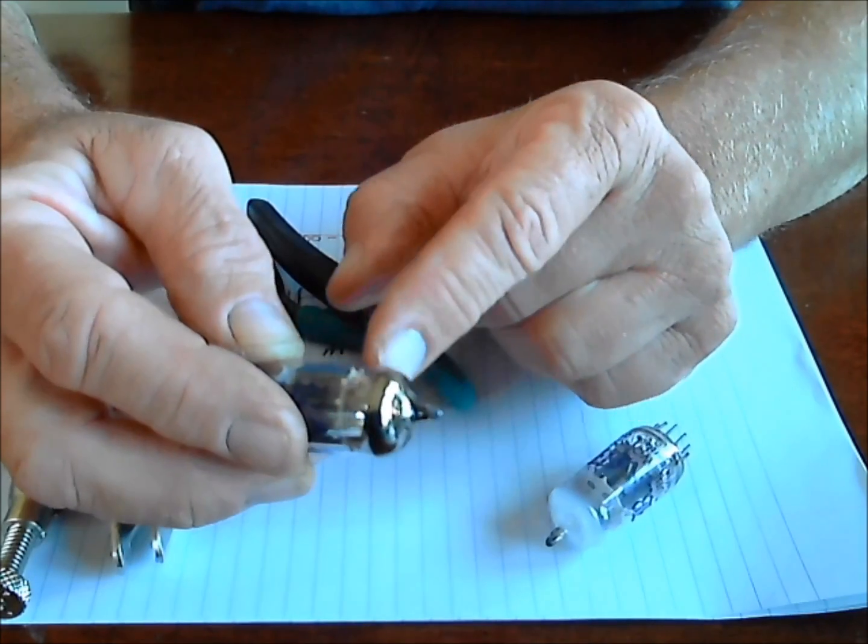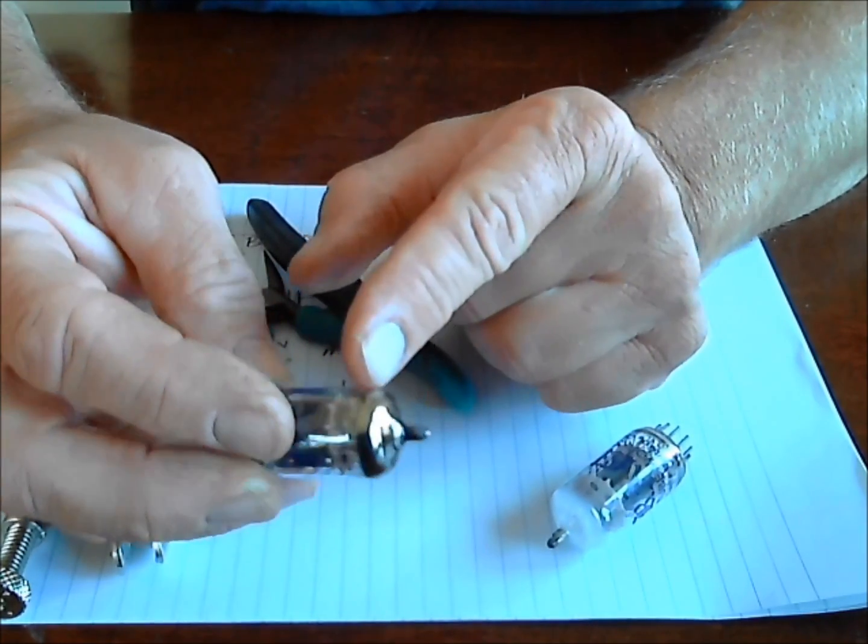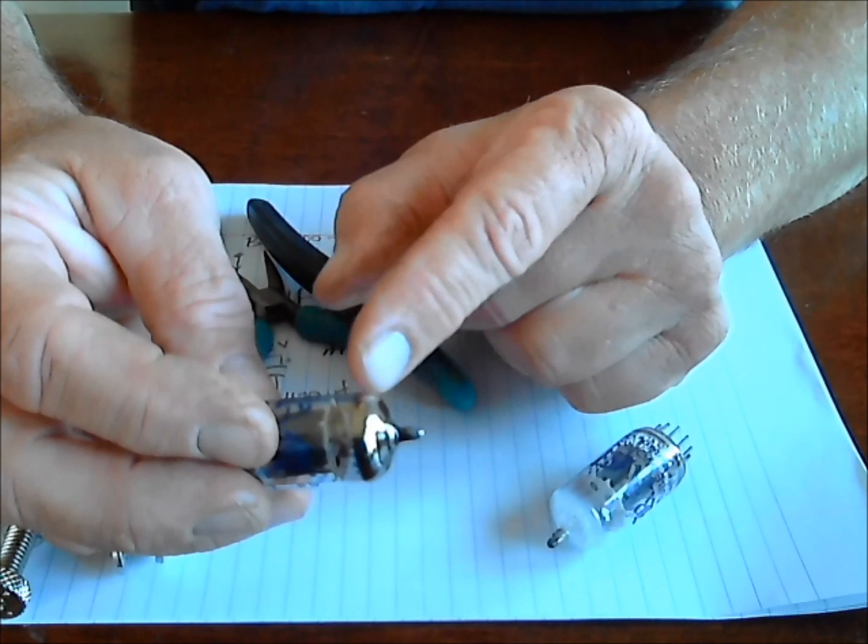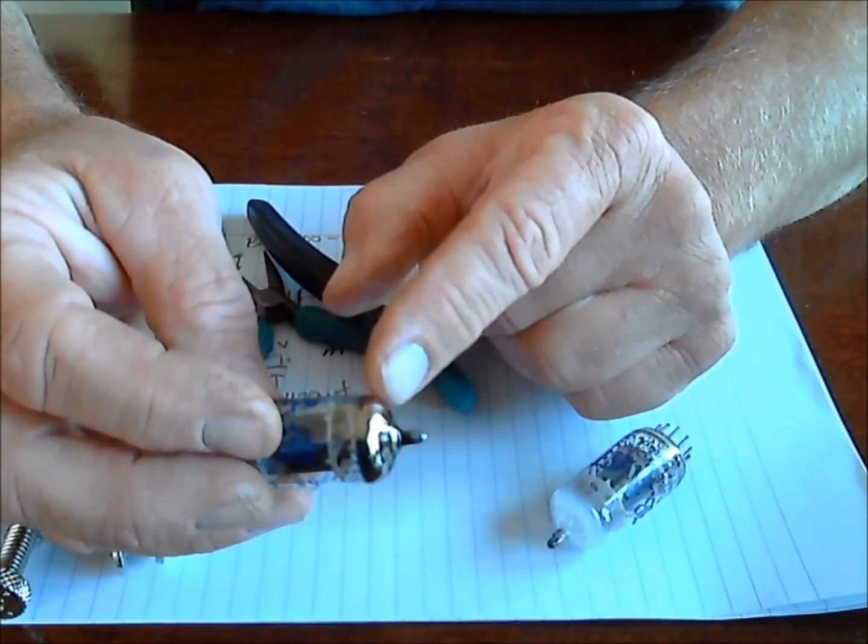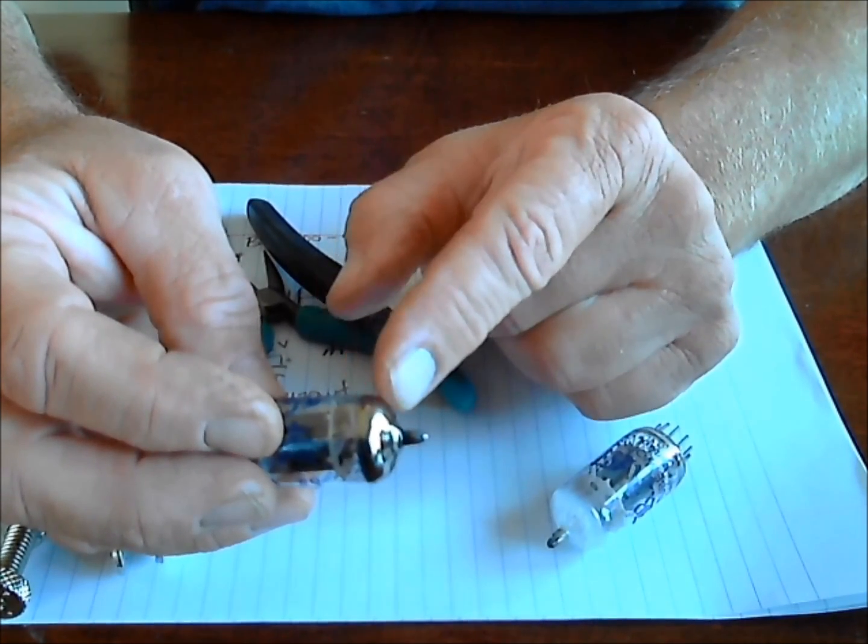It's also, interestingly, angled at the same angle of the getter inside, which I'll show you. But as it retreats, it often leaves behind a brownish stain, so you can see where it used to be and where it is.